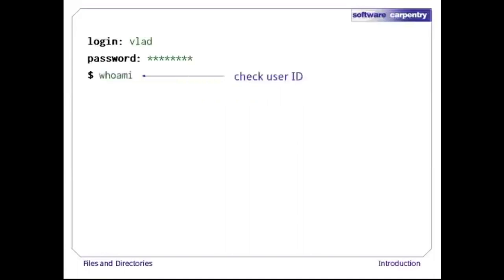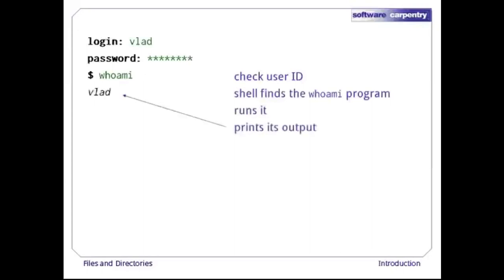Type 'whoami' followed by Enter. This command prints out the ID of the current user, i.e., shows us who the shell thinks we are. When we enter it, the shell finds a program called whoami, runs it, displays its output, and then displays a new prompt, telling us that it's ready for more commands.